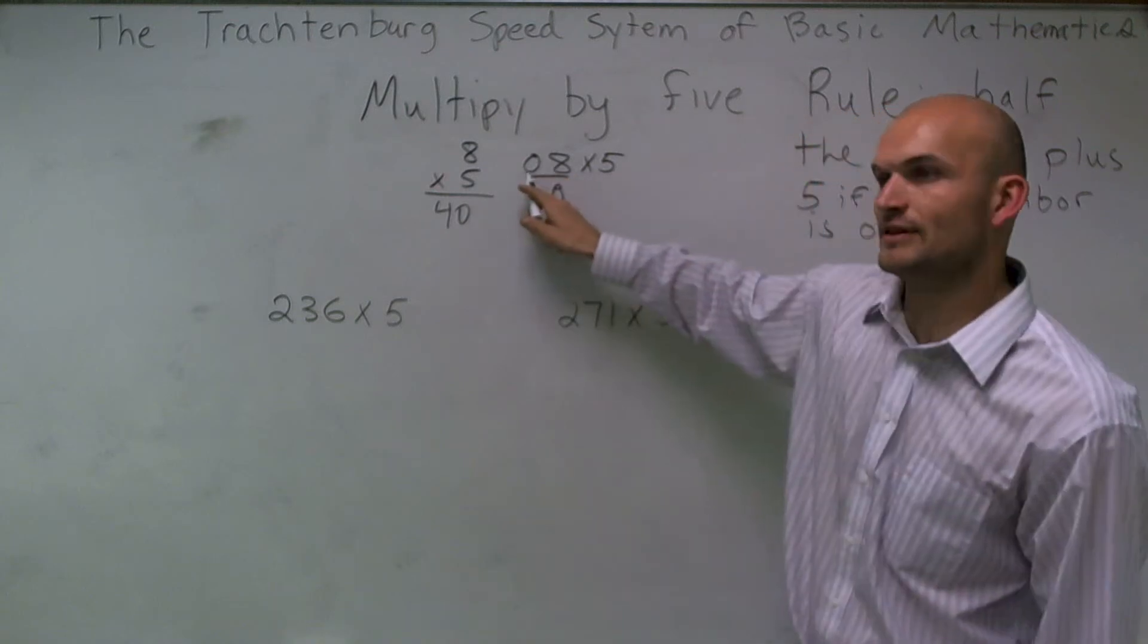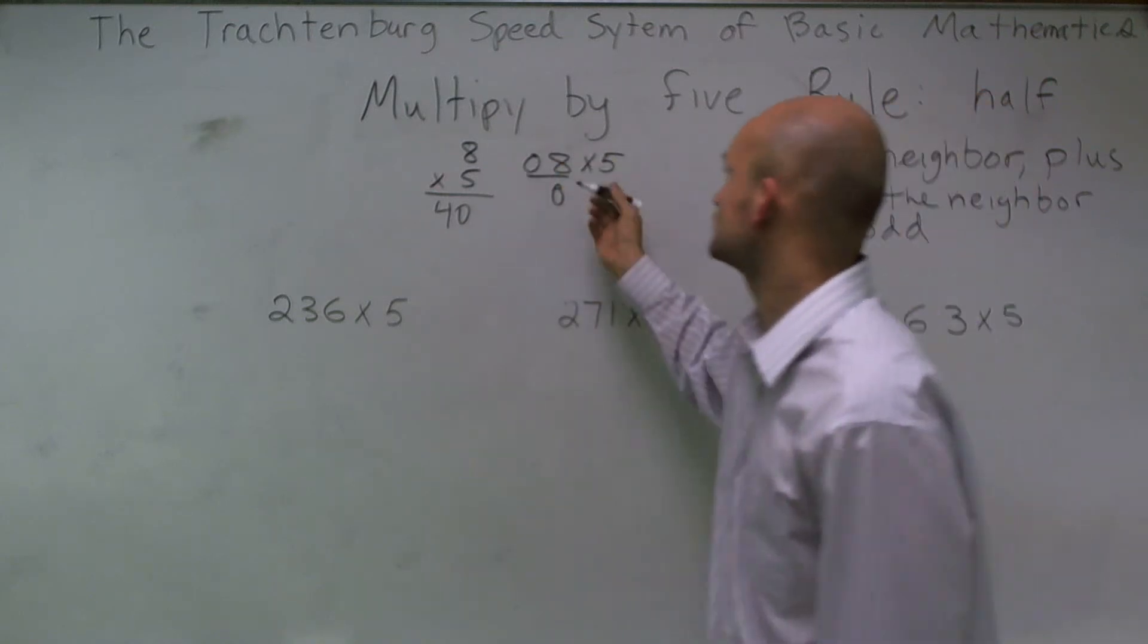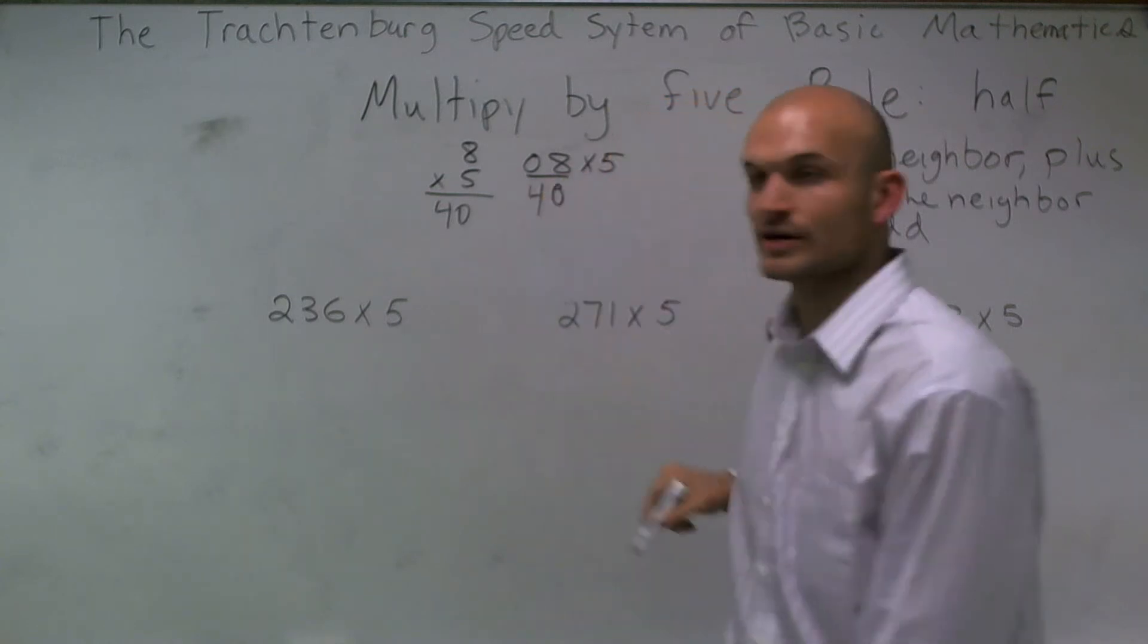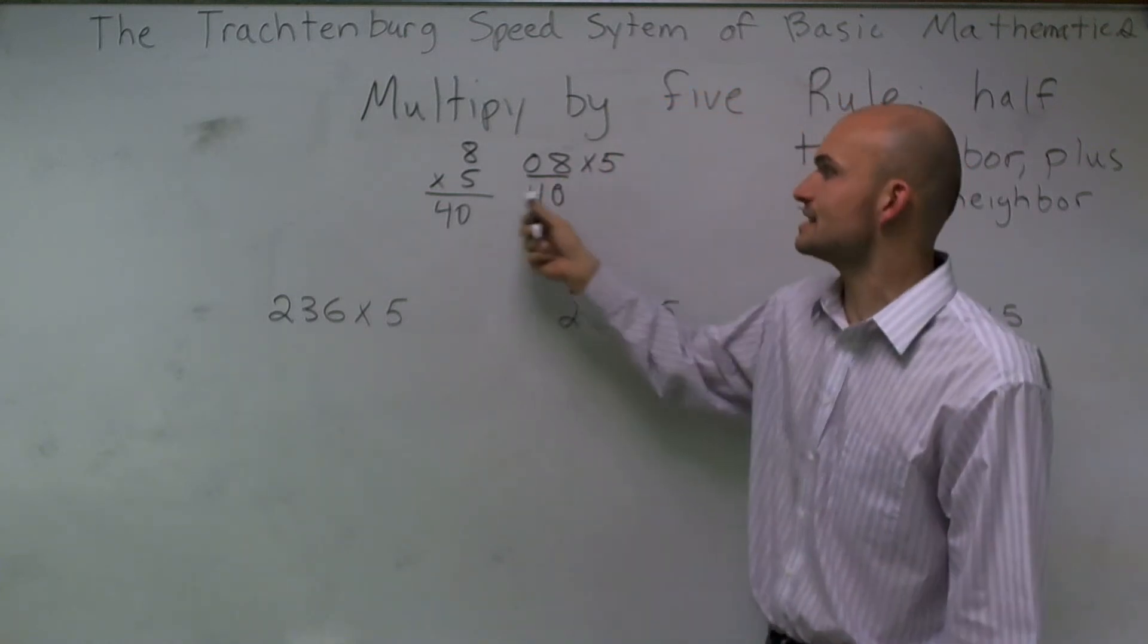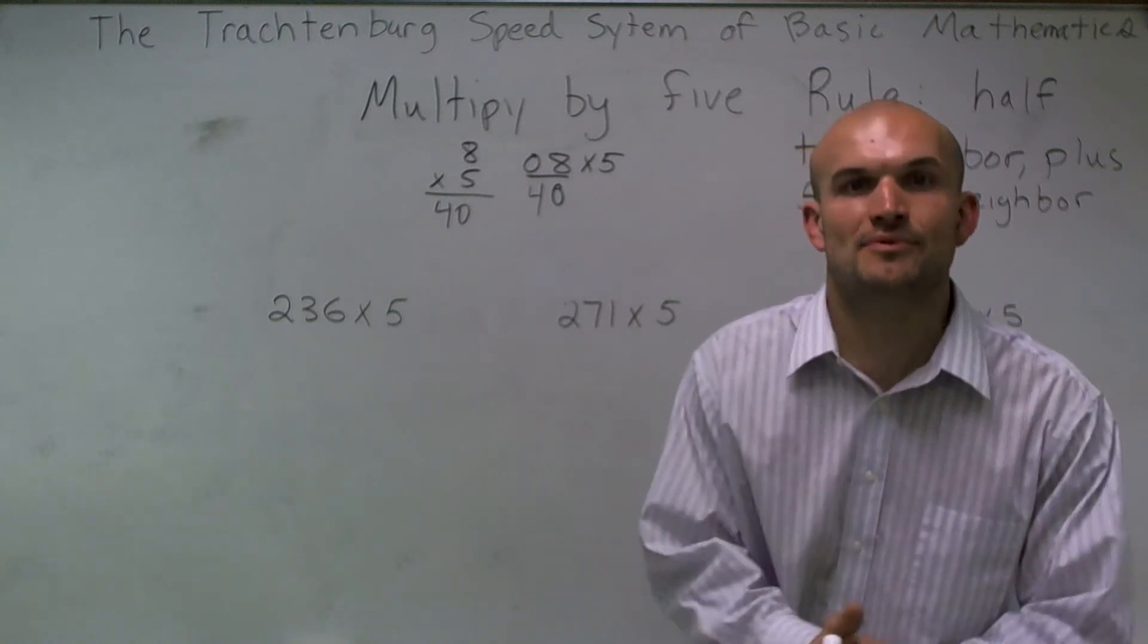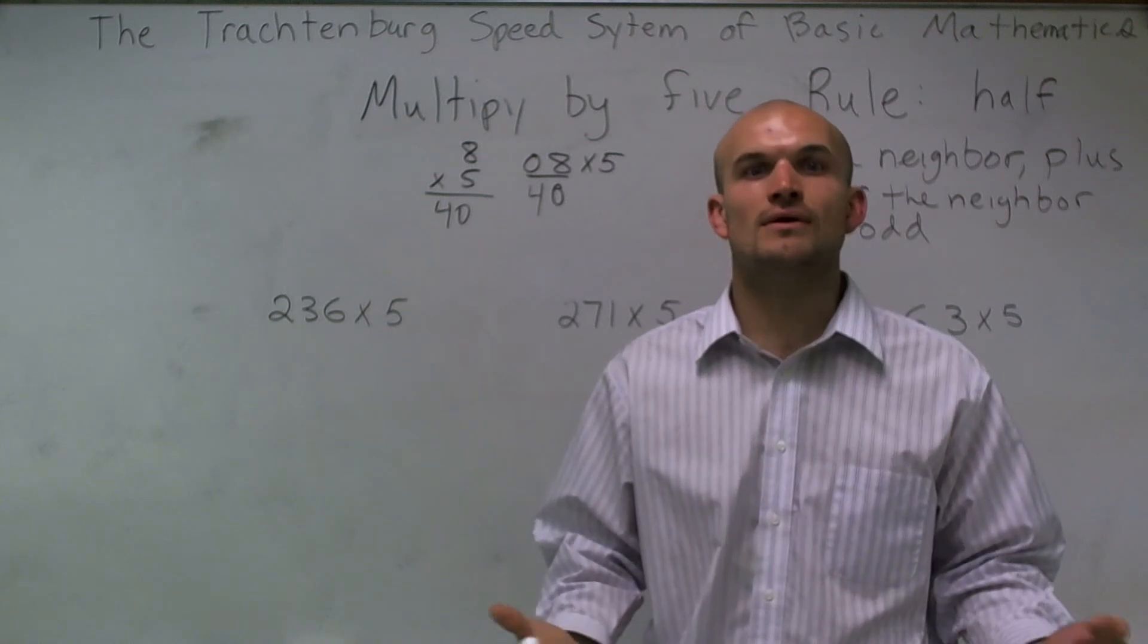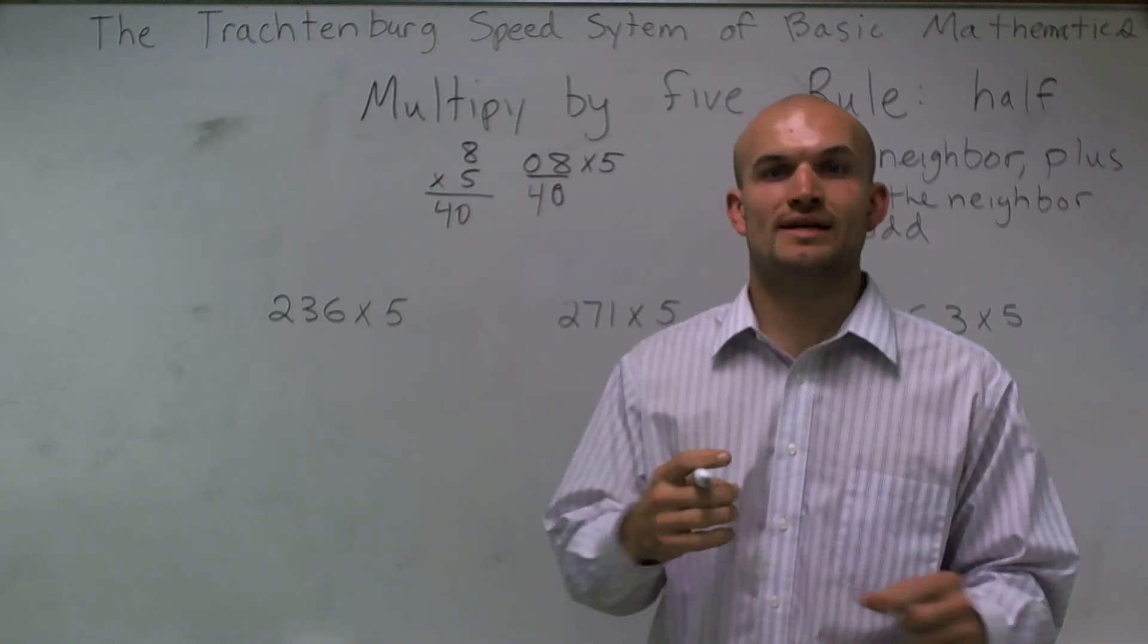So here, if I look at 0, I say half of its neighbor, which is 8, would be 4. And there again, by using the Trachtenberg system, you notice that we get the exact same answer. So let's go ahead and go through some examples so you guys can see how I'm going to work this out. Now again, for this video, I'm going to go through this very slowly and kind of step by step.